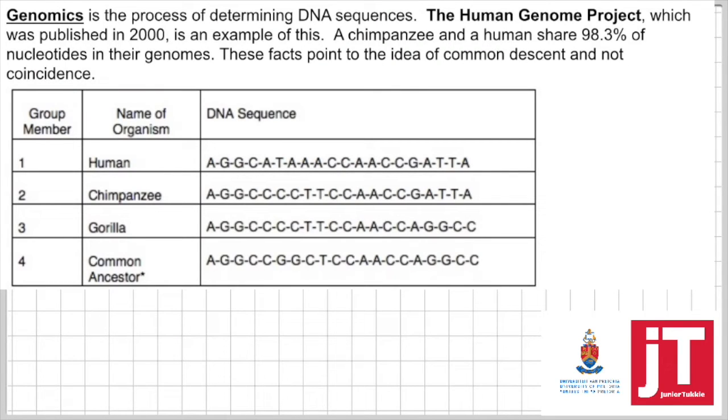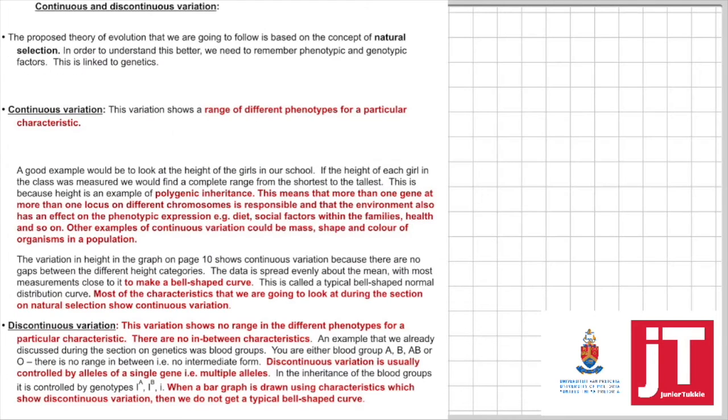The Human Genome Project was published in the year 2000. They looked at organisms and their nitrogenous bases or their nucleotide sequence. If you look at humans and chimps, you can see humans and chimps share 98.3% of their nucleotides. This proves that humans and chimps have a common ancestor.